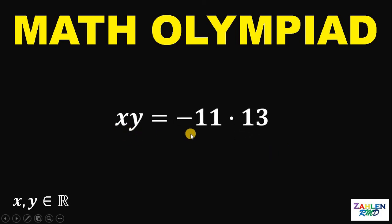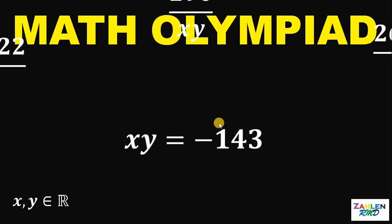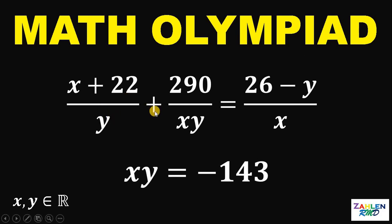So, x times y is just negative 11 times 13. And negative 11 times 13 is just negative 143. Therefore, the value of xy in this equation, x plus 22 over y plus 290 over xy equals 26 minus y over x is just negative 143.